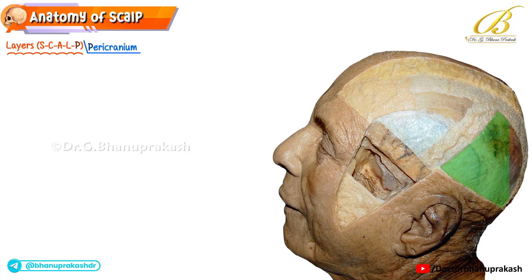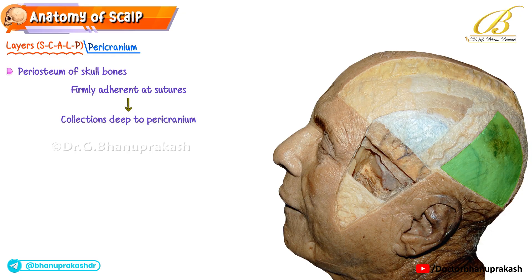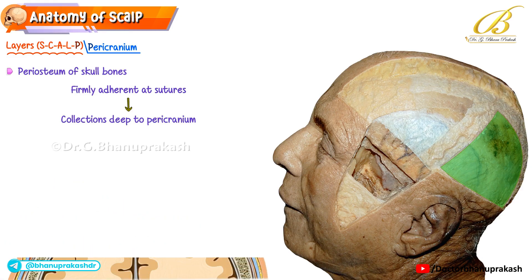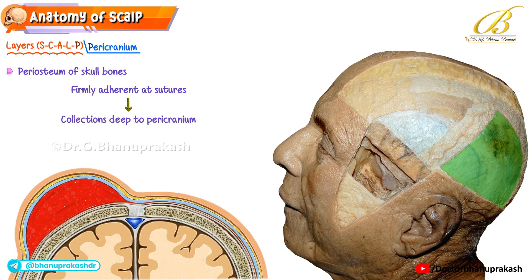This loose areolar layer is also the surgical cleavage plane used when raising scalp flaps. Finally, we reach the pericranium, which is simply the periosteum covering the skull bones. It is firmly attached along the sutures, so any collection beneath the pericranium — like a cephalohematoma — remains limited by suture lines. This contrasts with sub-aponeurotic collections, which can cross sutures because the loose areolar tissue above is not restricted.